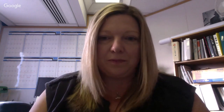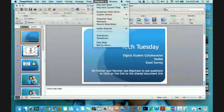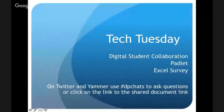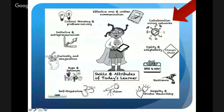You can use the link to the document that we've sent you. You can also use the hashtag DP chats on Twitter and Yammer and we'll be answering your questions. This morning we're looking at the skills and attributes of today's learner, highlighting the collaboration piece.